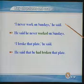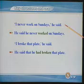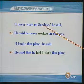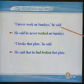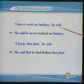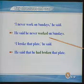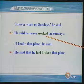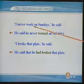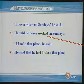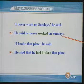I never work on Sundays, he said. 这是一个直接引语句子。在直接引语中,引语部分的动词时态和引述动词时态可以不必一致。但是改成间接引语的时候,引语部分的动词时态就要发生相应的变化。由原来的一般现在时就要改成一般过去时。He said he never worked on Sundays.